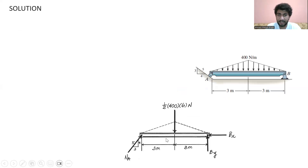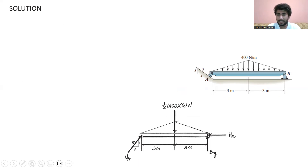In this free body diagram, as these forces make a triangle, we can say the resultant is one-half base multiplied by height. The base is six meters, and the 400 N/m is the height of this triangle.